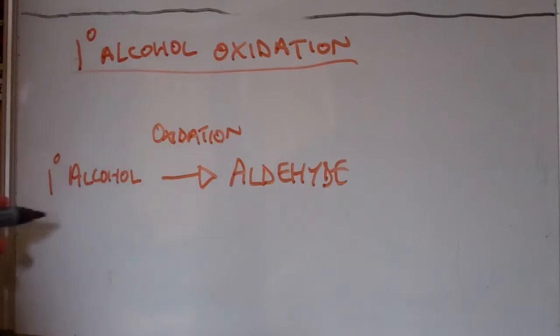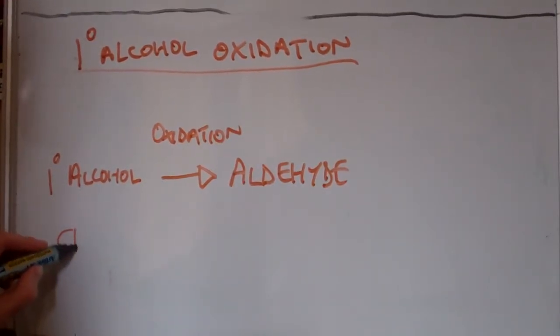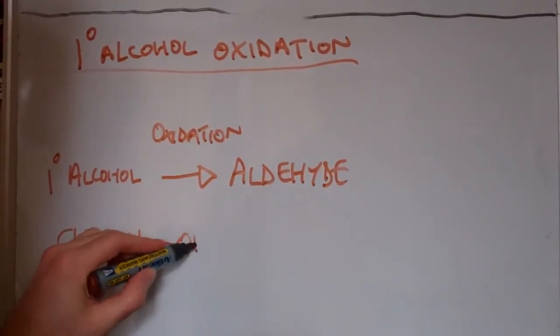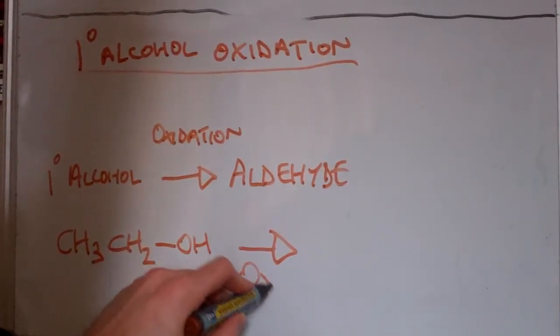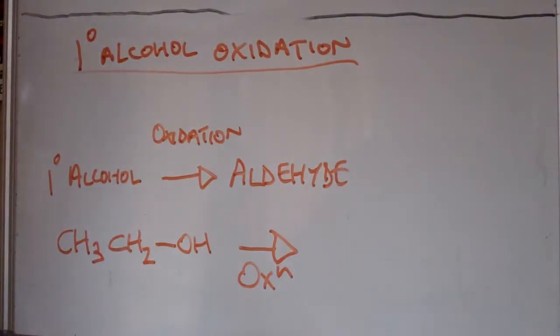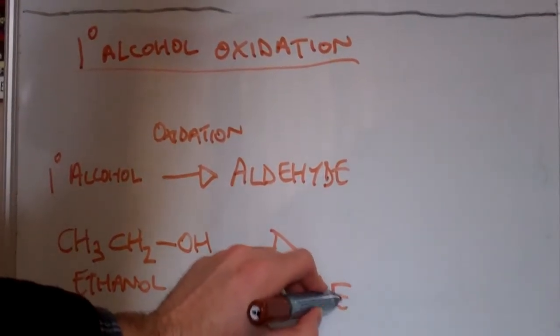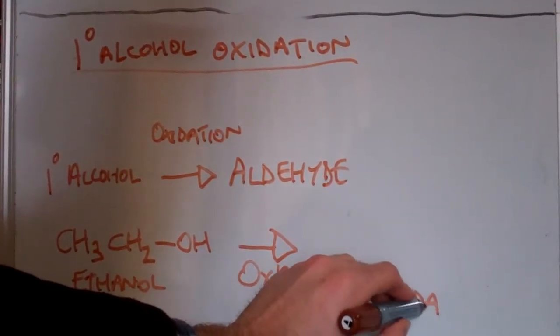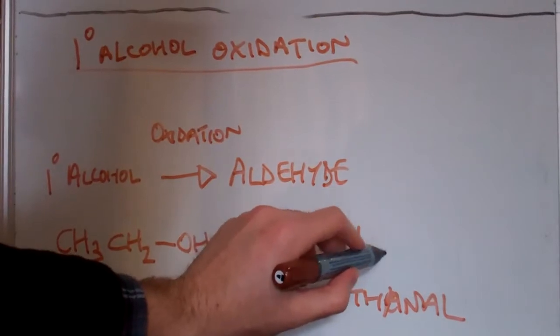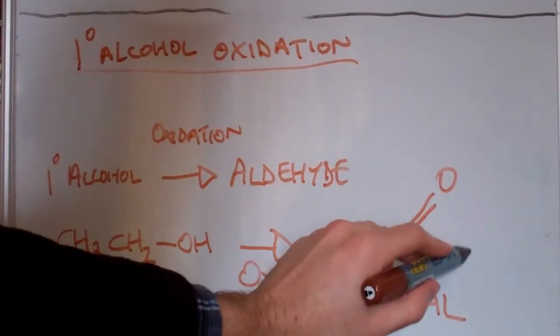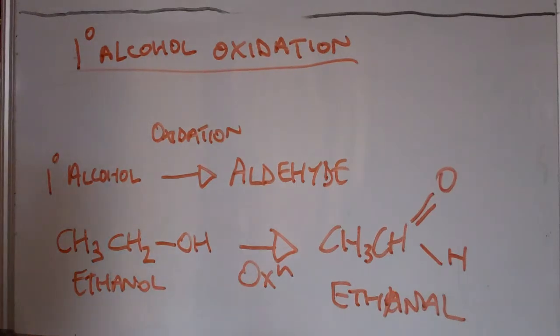If we look at ethanol as a common example: CH3CH2OH. After oxidation has occurred, we're left with the aldehyde ethanal. As a general rule, primary alcohols are oxidized to the aldehyde first.